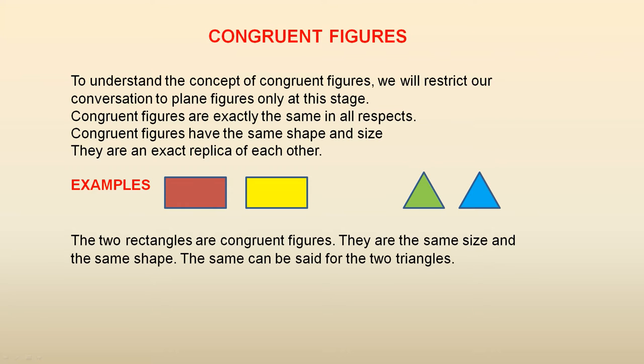Some examples. The two rectangles are congruent figures. They are the same size and the same shape. The same can be said for the two triangles.